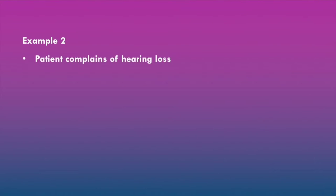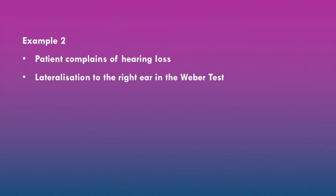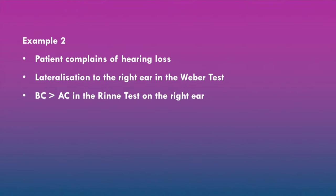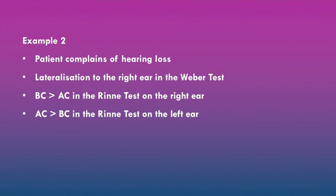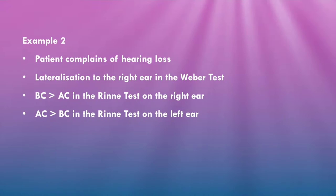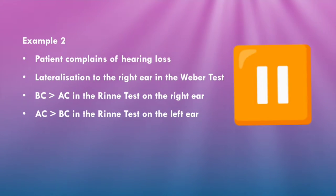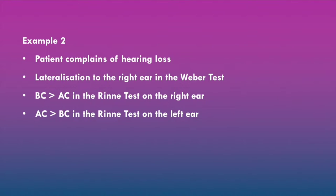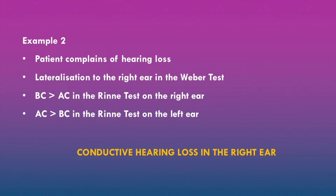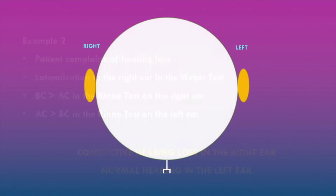In example two, we have a patient who complains of hearing loss. There is lateralization to the right ear in the Weber test. Bone conduction is greater than air conduction in the Rinne test on the right ear, and air conduction is greater than bone conduction in the Rinne test on the left ear. The likely diagnosis is conductive hearing loss in the right ear and normal hearing in the left ear.